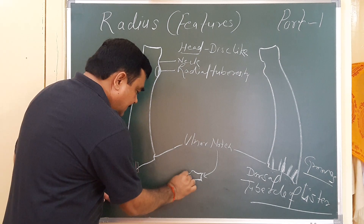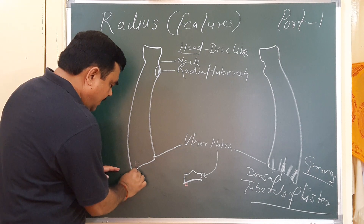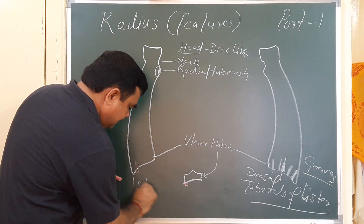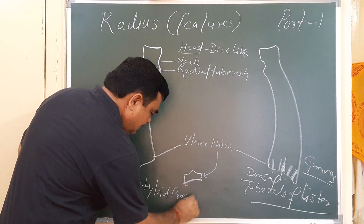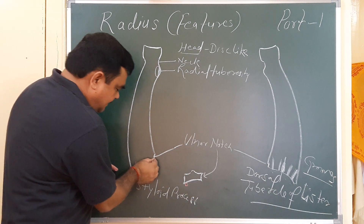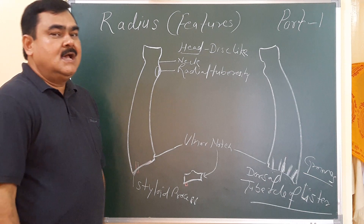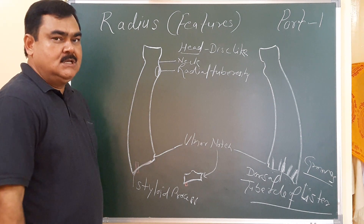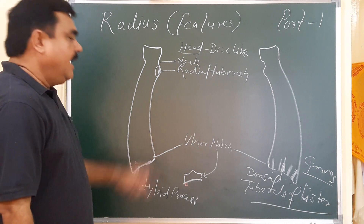This lateral surface projects downward and forms the styloid process. The inferior surface articulates with the scaphoid and lunate bones and forms the wrist joint. So this is the lower end.